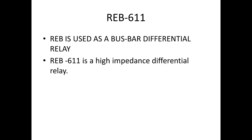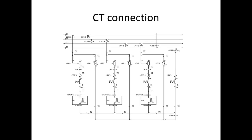Let's see the CT connection. All bus bar differential CTs are connected in parallel and fed to the relay. One linear resistor is connected in series with the relay, and one non-linear resistor is connected in parallel to the relay. For three phases, we will have this setup.